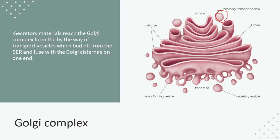These vesicles come from the endoplasmic reticulum. The endoplasmic reticulum buds off these vesicles. It means that the endoplasmic reticulum synthesizes proteins and lipids, and these incoming transport vesicles carry them through to the Golgi apparatus. The Golgi apparatus receives these incoming transport vesicles from the endoplasmic reticulum.